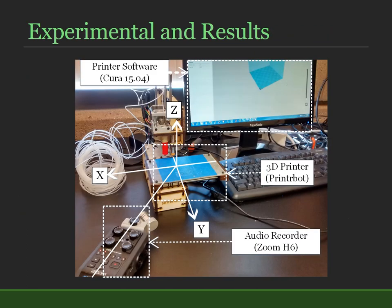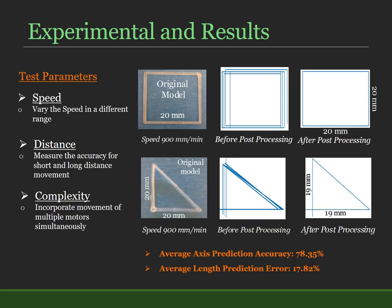Our experimental setup consists of an audio recorder, a 3D printer, and a printing software. We have defined speed, distance, and complexity as different test parameters. For these parameters, we obtained 78.35% average axis prediction accuracy and 17.82% average length prediction error.